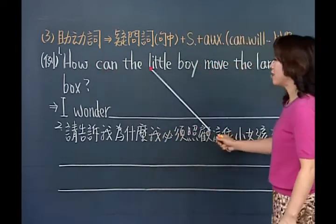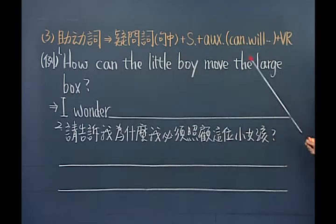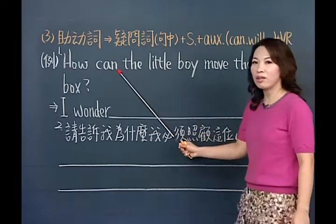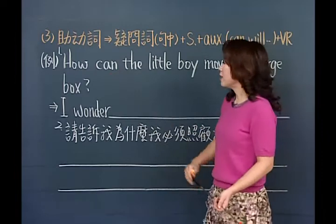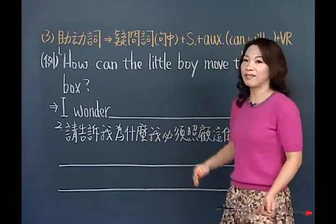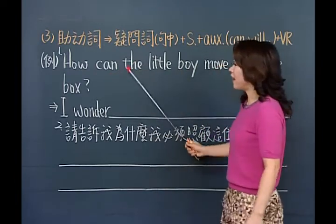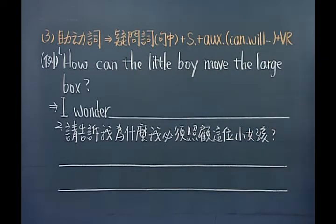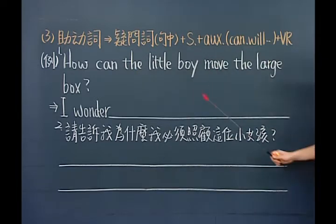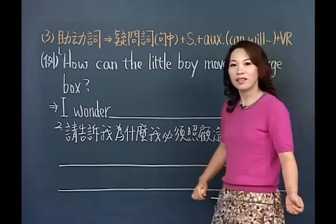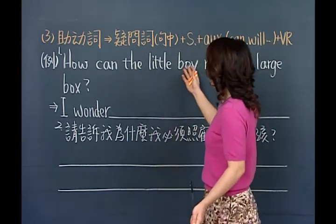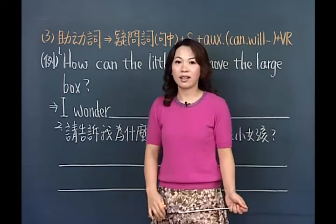所以要记得把它拿到主词的后面去。譬如说第一个例句：How can the little boy move the large box? Can表示能够，主词是The little boy（小男孩）。这个小男孩如何能够搬动这么大的一个箱子呢？好，你有没有看到这个Can是有「能够」的意思。